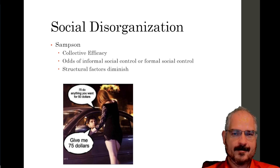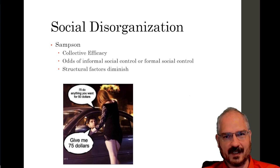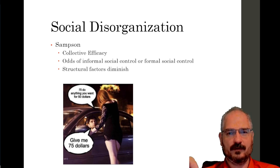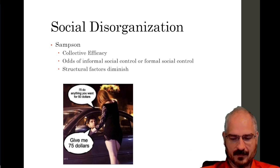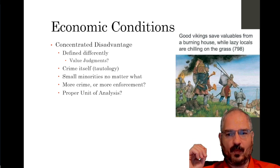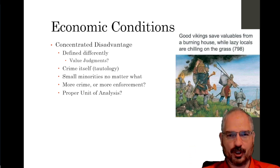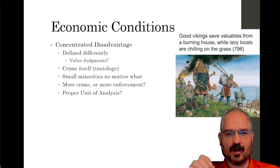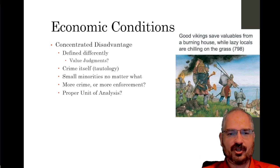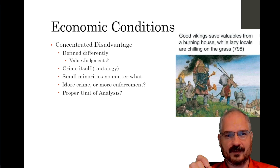If we want to increase collective efficacy, we have to reduce those structural factors — the poverty, the mobility of residents, and all those other issues. One of the ways researchers have tried to measure this is by looking at concentrated disadvantage, which is supposed to be a measure of the structural factors causing crime or reducing collective efficacy.